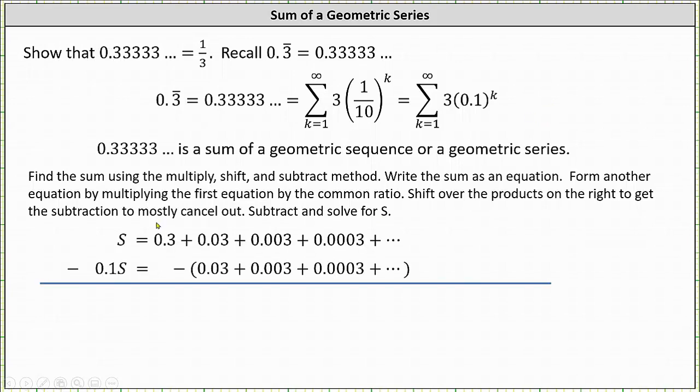First, we have s equals the repeating decimal as a sum, which is 0.3 plus 0.03 plus 0.003 and so on.